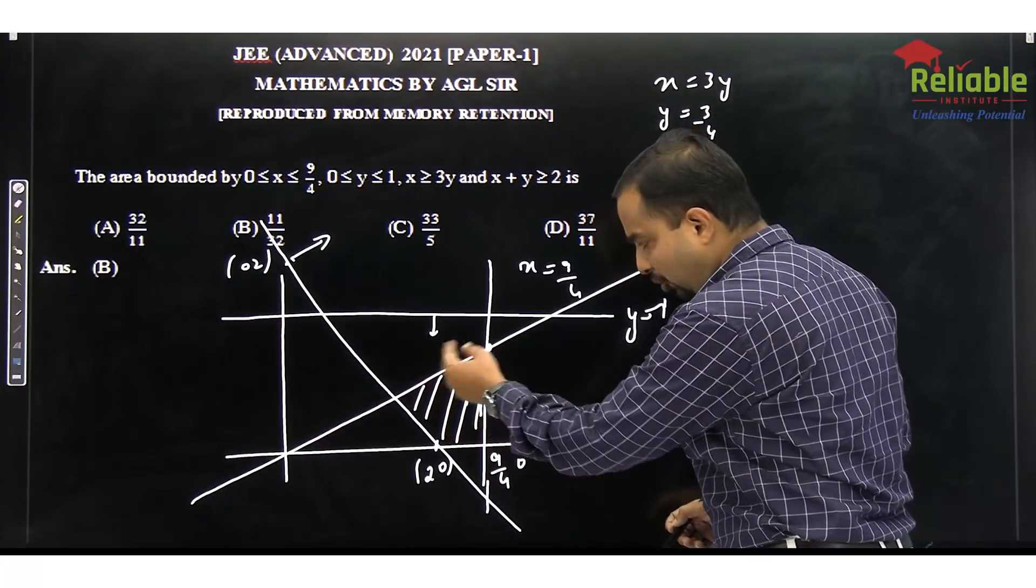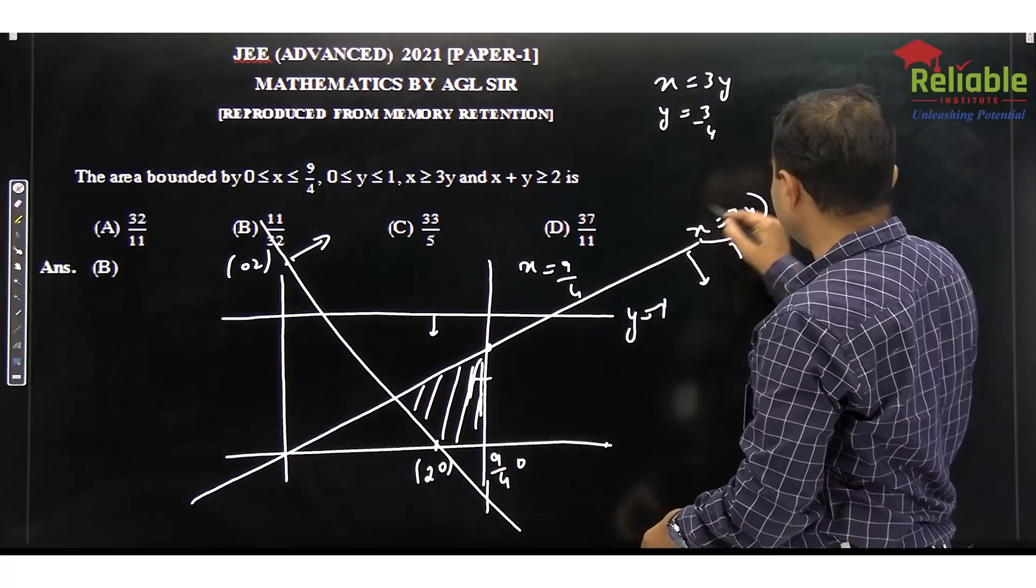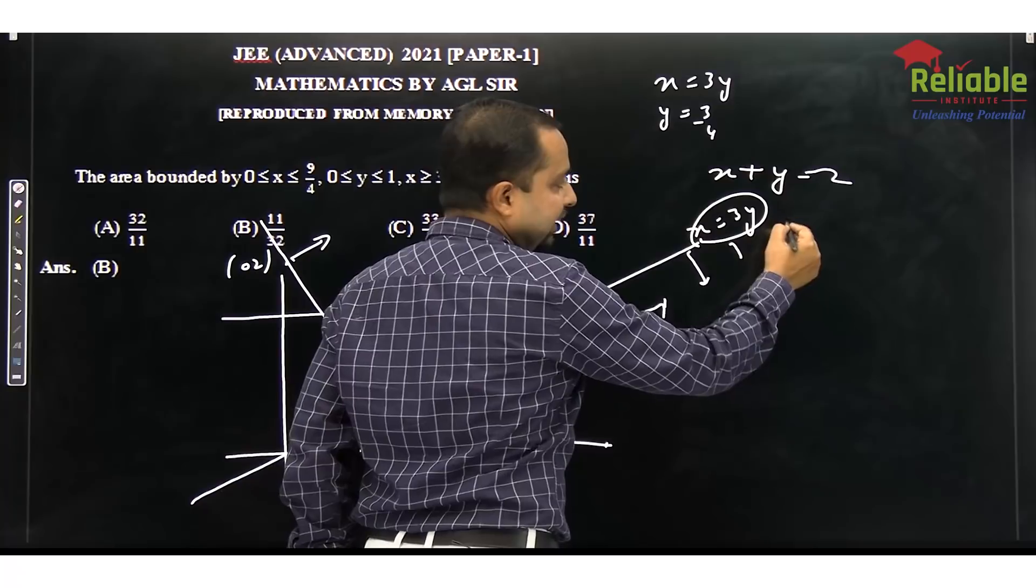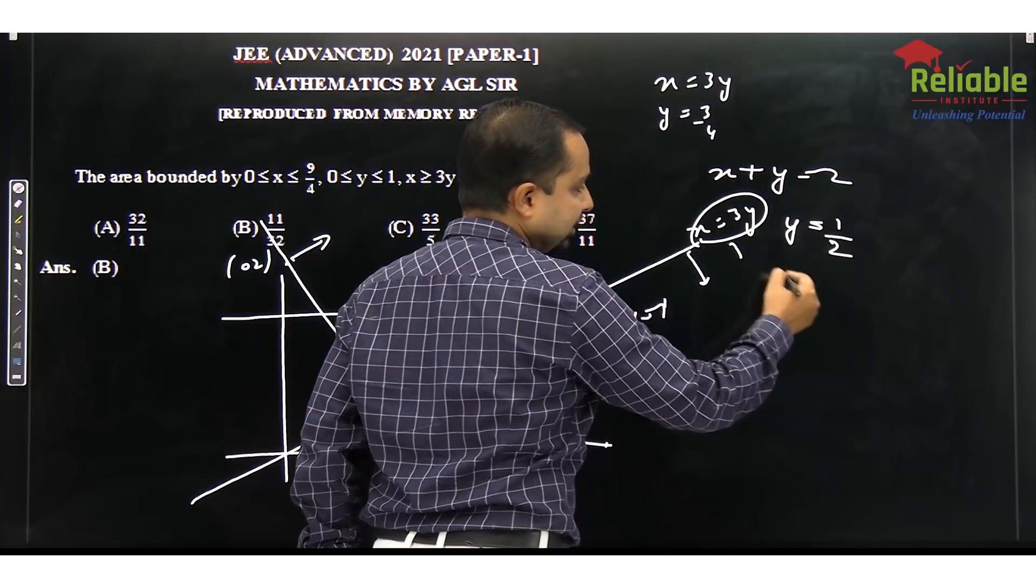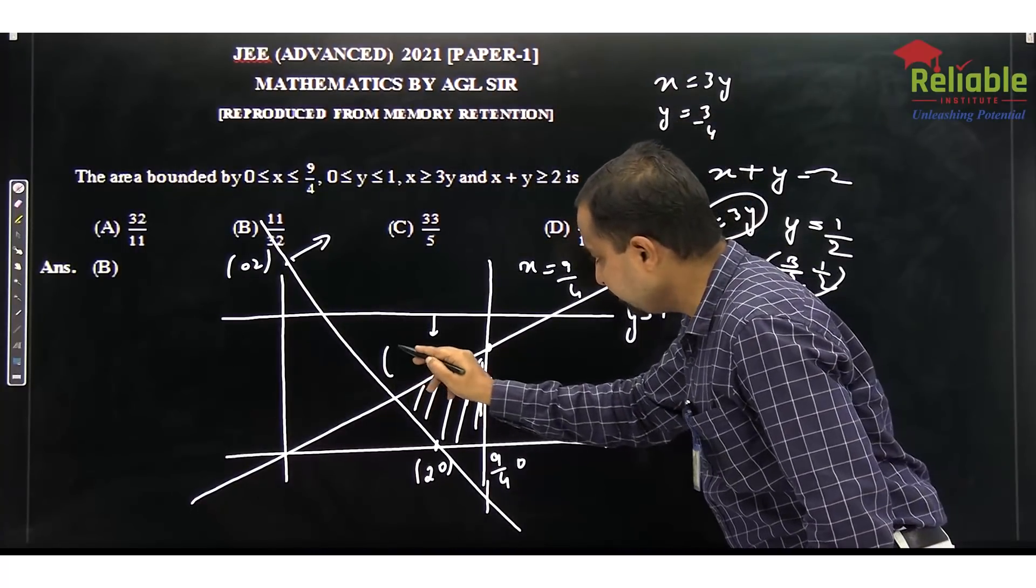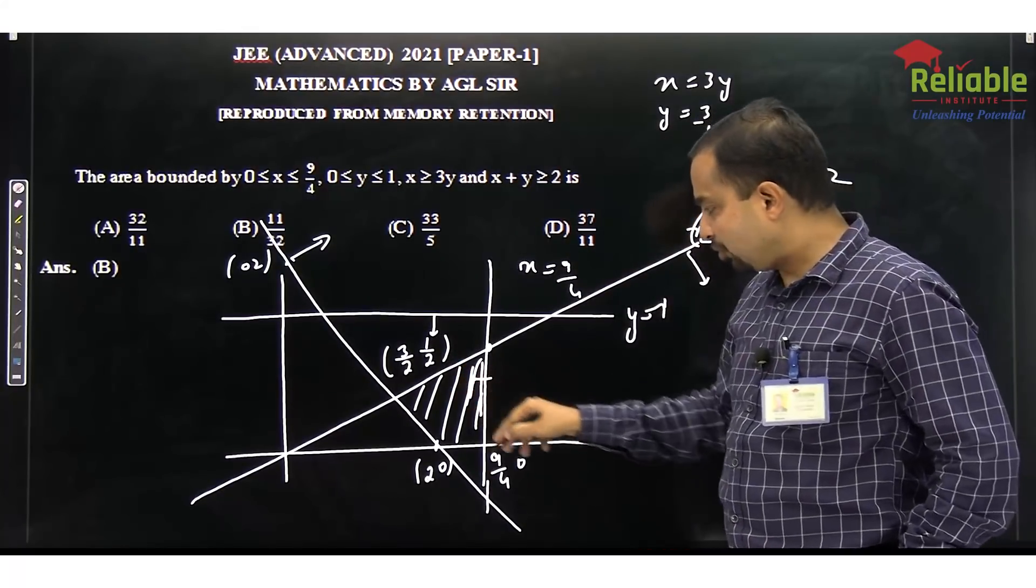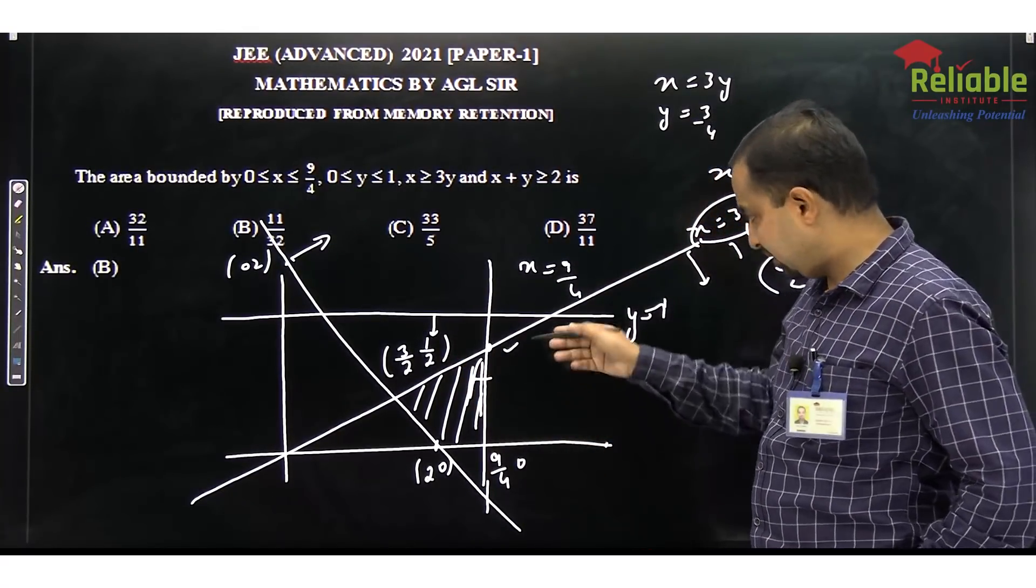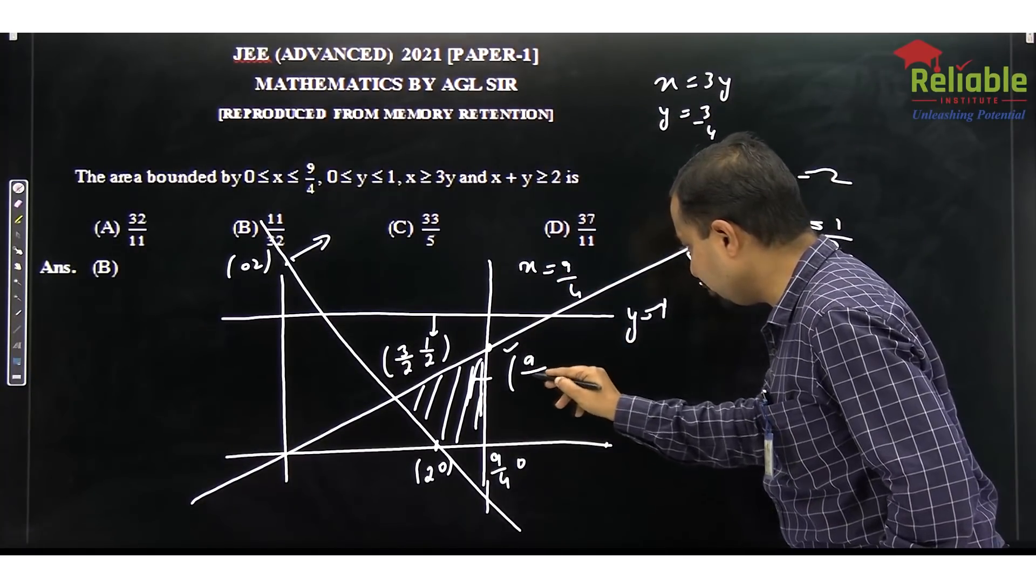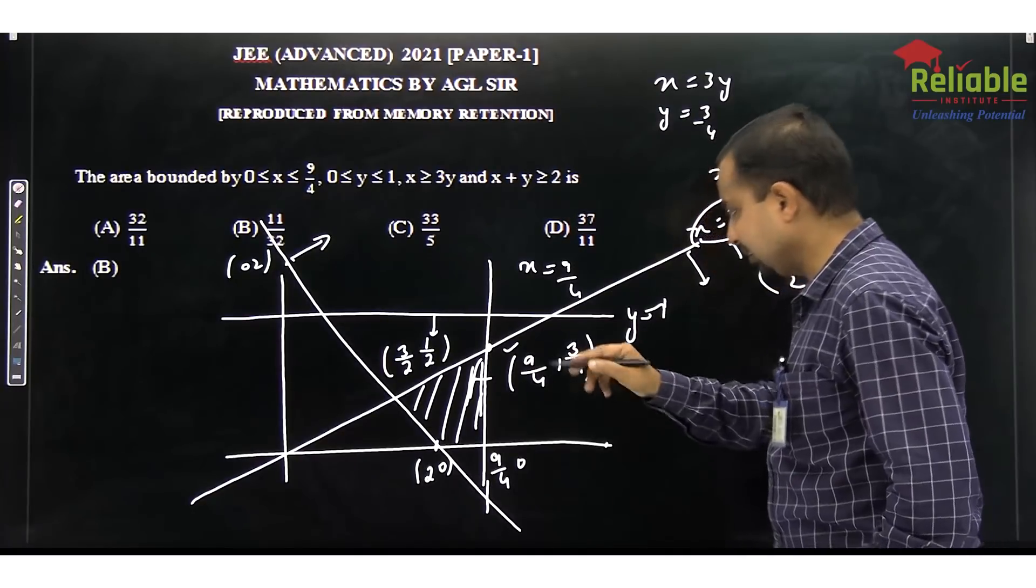This area, we can remove coordinates of this quadrilateral. We will solve x equals 3y with x plus y equals 2. If we add 3y, then y's value is 1 by 2. So the point is 3 by 2, 1 by 2. This point is 3 by 2, 1 by 2. This point x equals 3y, we have no idea. So x is our 9 by 4, and y is the value of x by 3, that is 3 by 4.